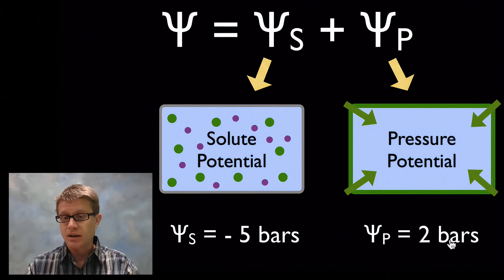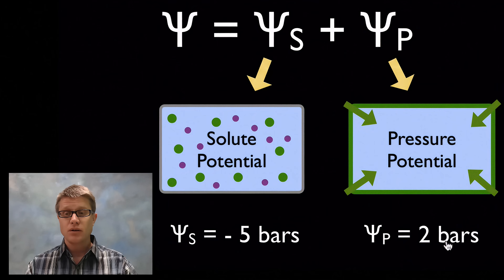What that's going to do is create what's called a pressure potential. We measure that in bars as well. Let's say that's two bars. Why is it a positive value? Remember that's going to be pushing in, it's going to want to push water out of that kind of an area.